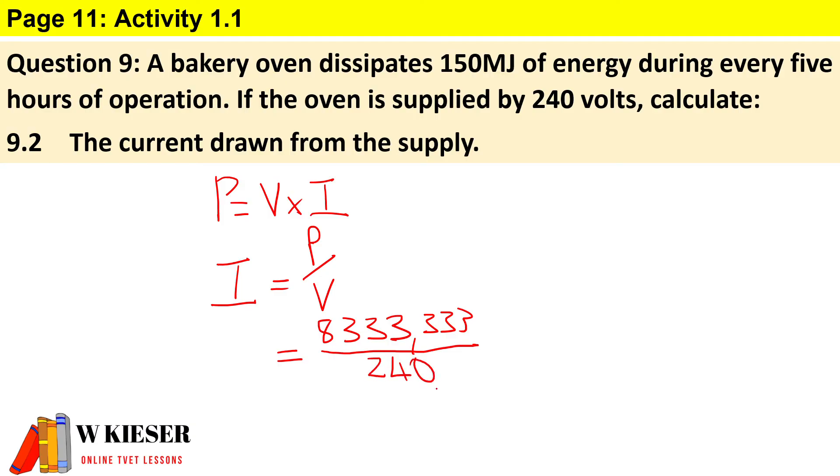Therefore, the current drawn by this oven will be 34.721 amperes.